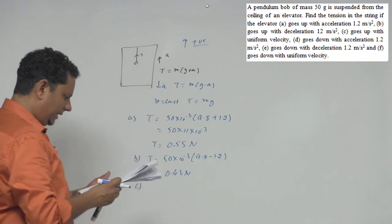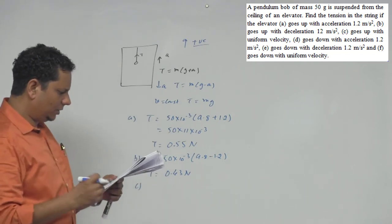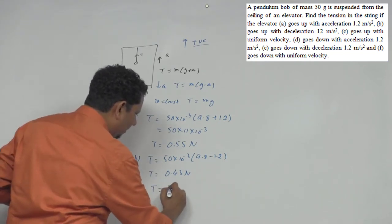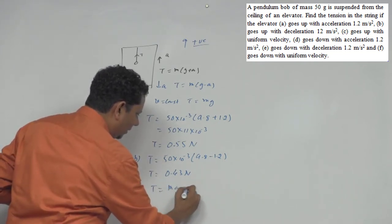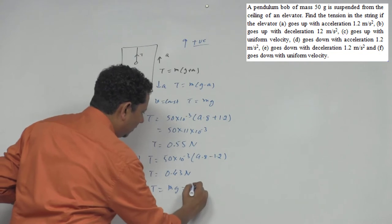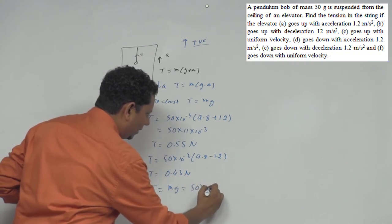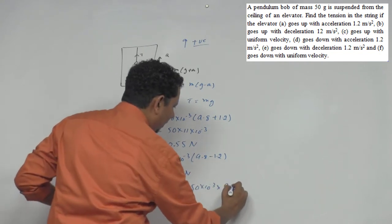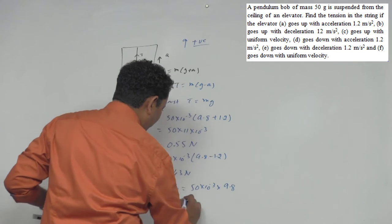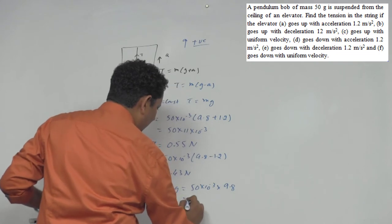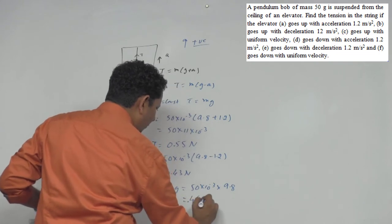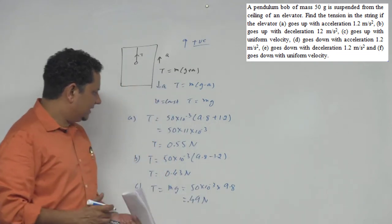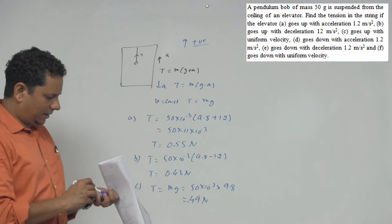Third case है, goes up with uniform velocity, so tension will be equal to mg. So ये हो जाएगा 50 into 10 to the power minus 3 multiplied by g, यहाँ g = 9.8 ले रहे है, so this will be equal to 0.49 Newton. ये आपका इस case में answer हो जाएगा।